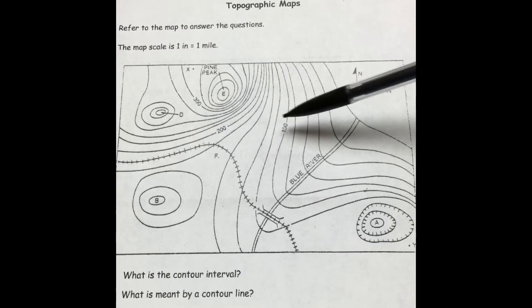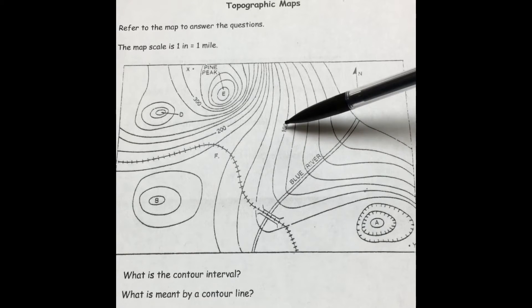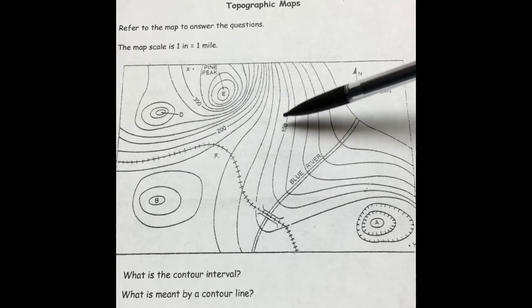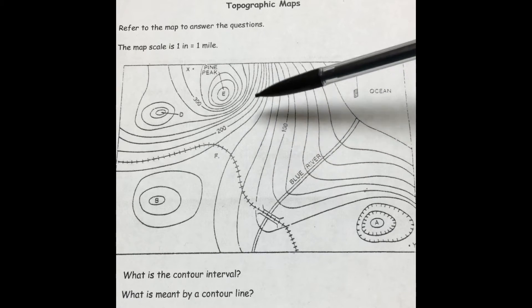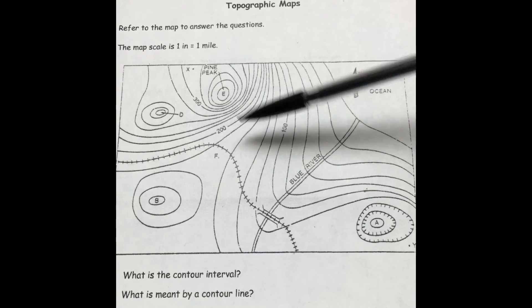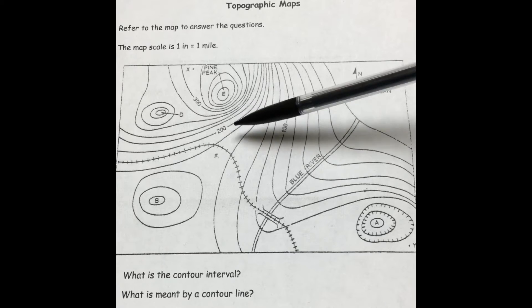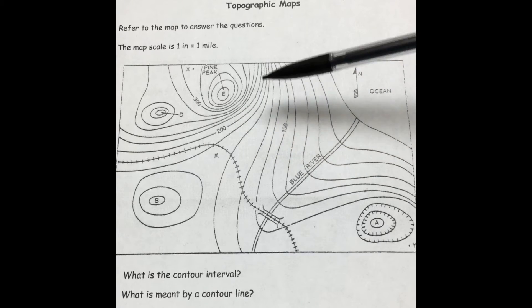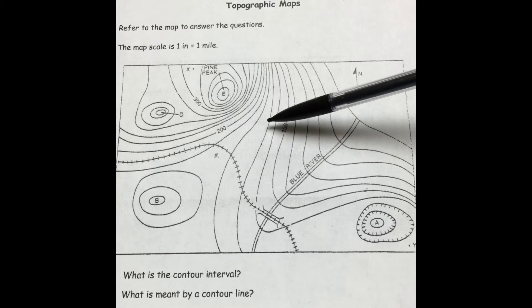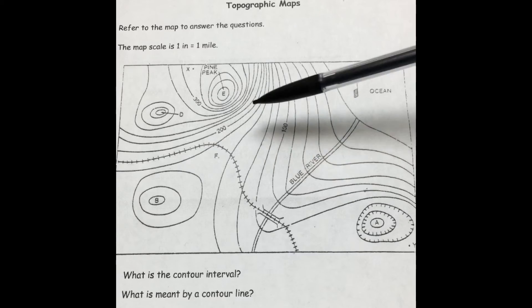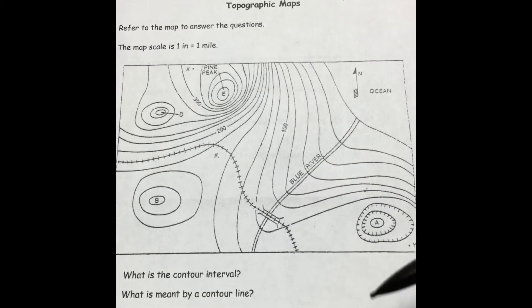Right here we can find the interval between 100 and 200. You count the total number of lines in between: one, two, three, four, five. That's 100 meters divided by five, which equals 20 meters. You can check your answer by going 100, 120, 140, 160, 180, 200. So the contour interval is 20 meters.